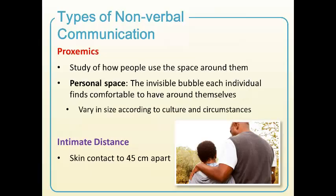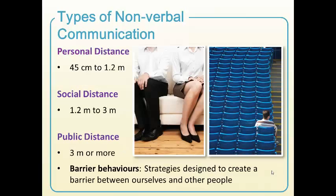Proxemics is the study of how you use the space around you. Personal space refers to the comfort zone where you'll allow people in and feel comfortable. Intimate distance is skin contact or about 45 centimetres apart. Personal distance is roughly half a metre to a metre — about one and a half to just over three feet. Social distance follows after that, and around 10 feet is where we'd prefer people we don't know to be.